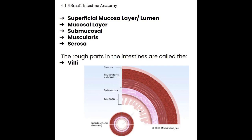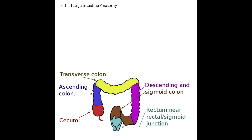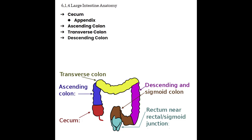Moving on to large intestine anatomy. The large intestine picks up from the small intestine at the junction of the ileum and cecum. The large intestine contains six sections: the cecum, which is home to the appendix; the ascending colon; the transverse colon; the descending colon; the sigmoid colon; and the rectum, which is home to the anus.